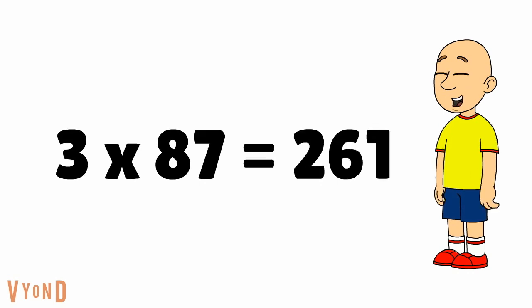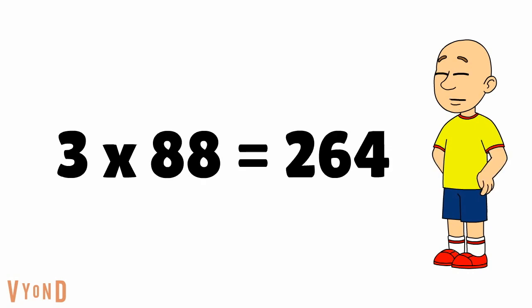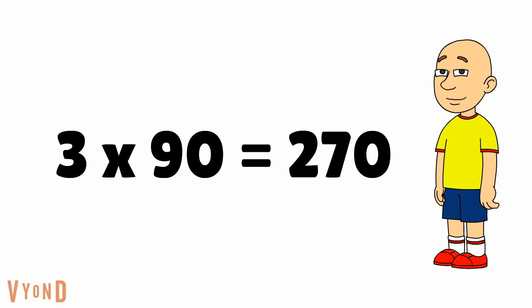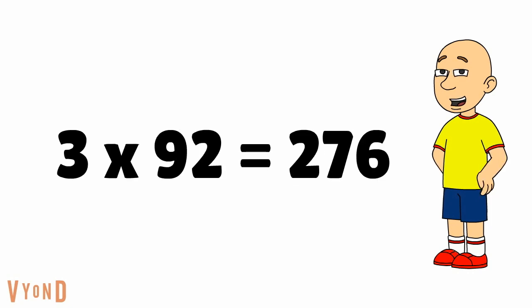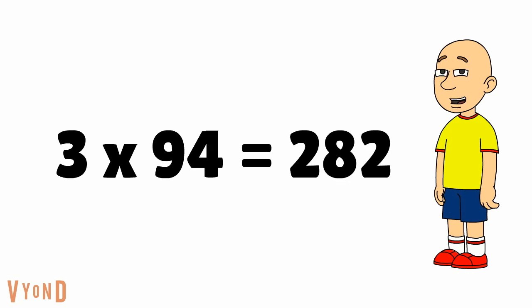3 times 87 equals 261. 3 times 88 equals 264. 3 times 89 equals 267. 3 times 90 equals 270. 3 times 91 equals 273. 3 times 92 equals 276. 3 times 93 equals 279. 3 times 94 equals 282.